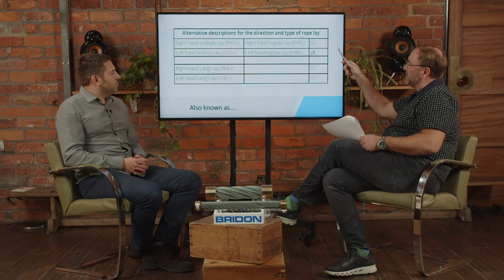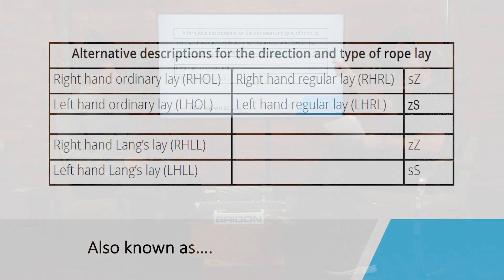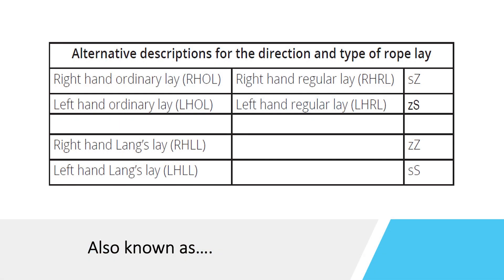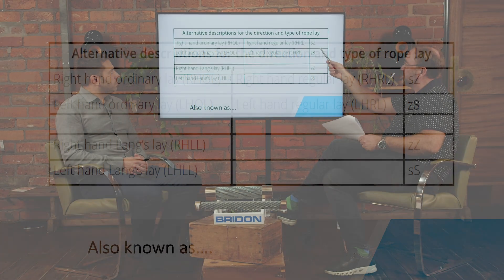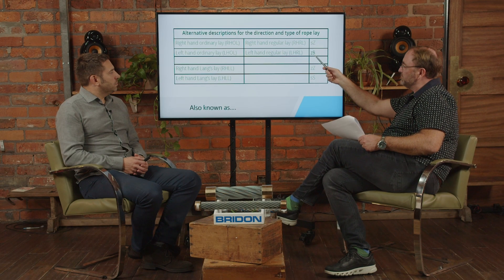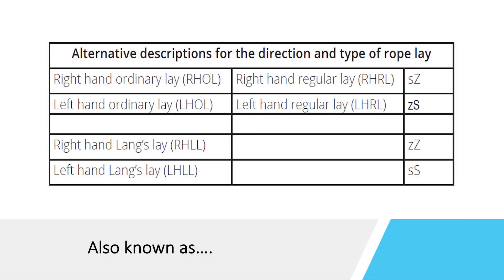Thank you very much. So there's quite a lot of confusion around this, and there are also other naming conventions. That's not too easy to understand for everyone — for rope experts it's straightforward, but for non-experts it can be a little tricky. We have a chart in our brochures showing that right hand ordinary lay rope has the short form RHOL, S-Z, or Z-S for left hand regular lay rope, or Z-Z and S-S for right hand and left hand Lang lay rope respectively.